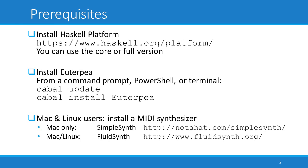Once Haskell has been installed successfully, you can install Euterpia by opening a command prompt or PowerShell on Windows, or opening a terminal on Mac or Linux, and running the command cabal update, followed by cabal install Euterpia. Be patient after running each command. What follows after running the installation step, in particular, can take a while. You may see a lot of output, but if the installation is successful, you will eventually see a message at the end indicating so.